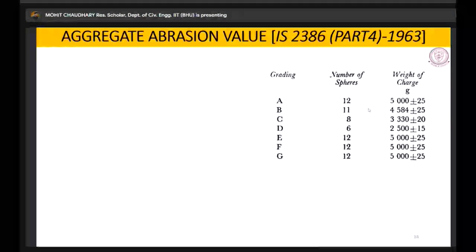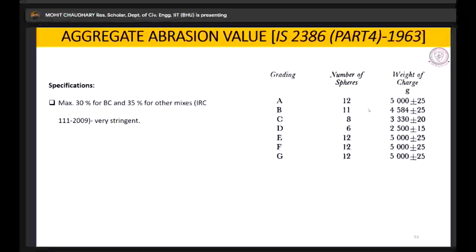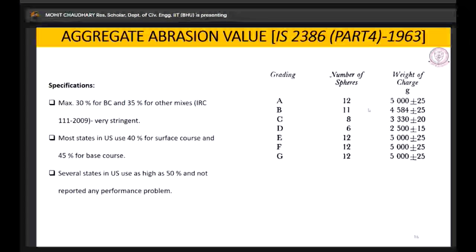This is the number of spheres which have been described in the code for using different gradations. The specification says we can use the highest upper limit for abrasion is 30% for BC and 35% for other mixes. It is very stringent in our code. In outside codes like US, they permit up to 40% for surface course and 45% for base course. They have even gone up to 15% and have not reported any performance issues.